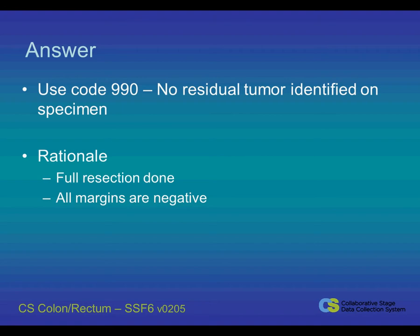Code 999 in this example would not be correct. Even though there is no CRM margin specified on the pathology report, as noted in the description for code 999, the more accurate answer would be 990, since it is specific to no residual tumor, as in this scenario.